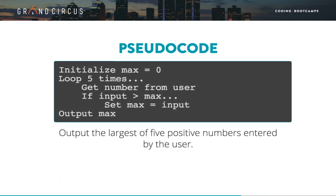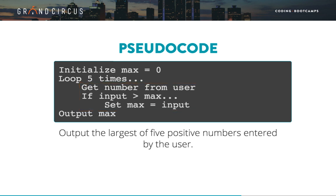Here's an example of using pseudocode to describe the same algorithm of finding the largest positive number. The pseudocode reads from top to bottom, just like real code, but the statements are written in shorthand English. Note the use of indentation to show that these lines happen inside the loop. Indentation also indicates that this line is inside the if, and only happens if the input is greater than max. This is a common use of indentation in pseudocode. Output max then returns to the first level of indentation, indicating that it should happen only after the loop is finished repeating five times.